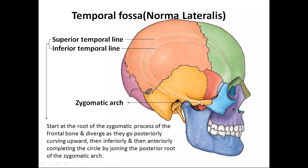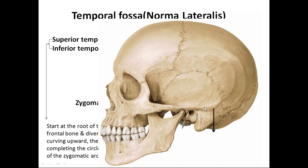You can see the zygomatic arch here. The temporal line starts at the root of the zygomatic process of the frontal bone and diverges as it goes posteriorly into two lines: the superior temporal line and the inferior temporal line. The superior temporal line, when it curves posteriorly and inferiorly, fades away. But the inferior temporal line continues anteriorly as the supramastoid crest and continues with the posterior root of the zygomatic arch. Behind, the superior temporal line fades away while the inferior temporal line continues as the supramastoid crest.